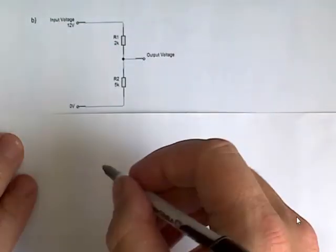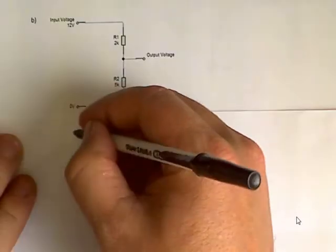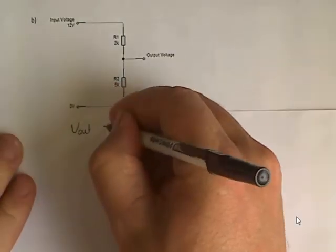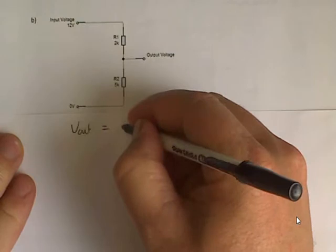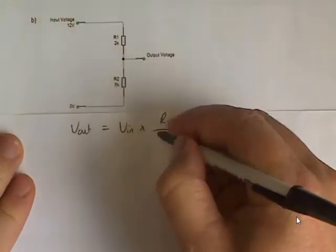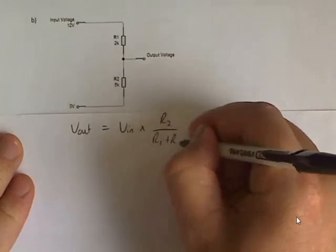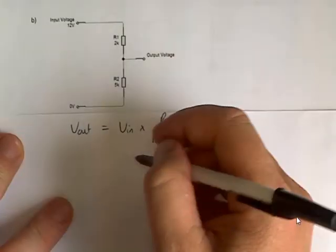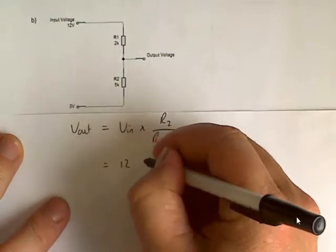So let's calculate what it will be. So again, V out equals V in times R2, in this case we have R1 plus R2, substituting my values, 12 times,